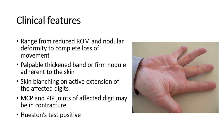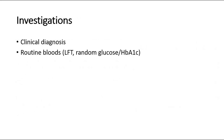Hueston's test is a specific test that can be performed for such patients. If the patient is unable to lay their palm flat on a tabletop, this is a positive test. For investigations, diagnosis is clinical; however, patients should ideally have routine bloods including liver function tests and random glucose or HbA1c, to assess for potential associated risk factors.